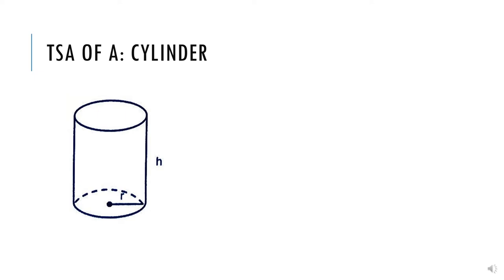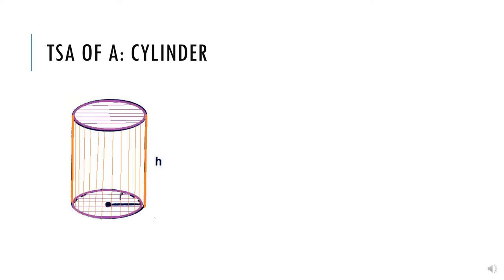Let's look at the calculation of the surface area of a cylinder. In a cylinder, there are two circles — two surface areas of a circle that we need to include in our calculation. And then also the area of the curved surface of the cylinder, which will include the calculation with the height and the circumference of the circle.